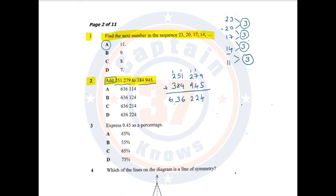Do we have this answer anywhere in this list? So we check. Is it this one? No, it is not. Is it this one? No, it is not. Is it this one? No, it is not. Is it this one? Yes, it is. And therefore the answer is D.